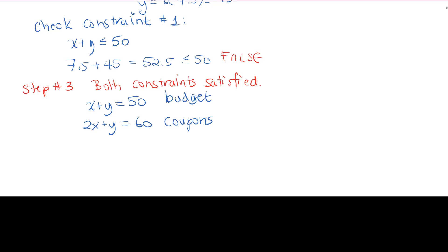So we use up all of our money and all of our coupons. We actually don't even need to do a Lagrange problem here because we have two equations and two unknowns. We can just use substitution.